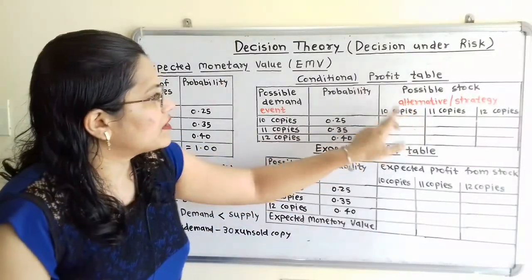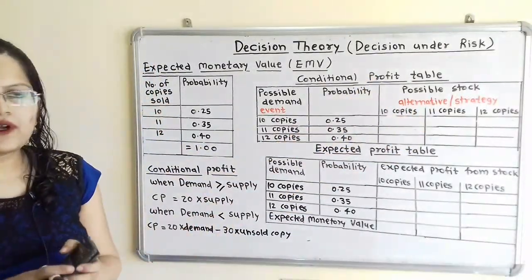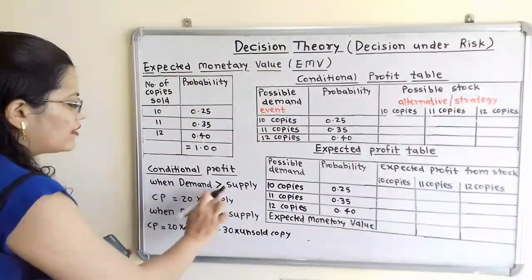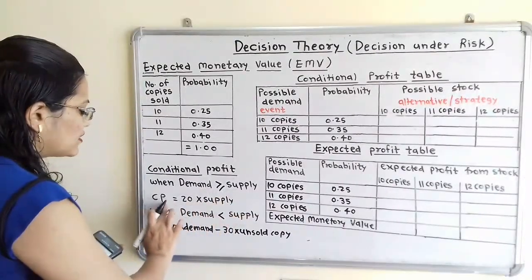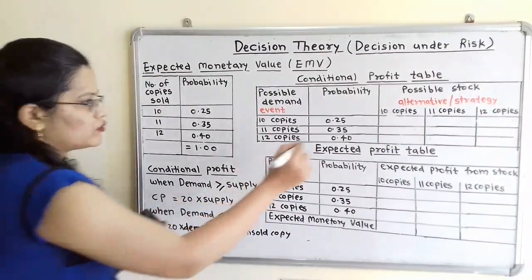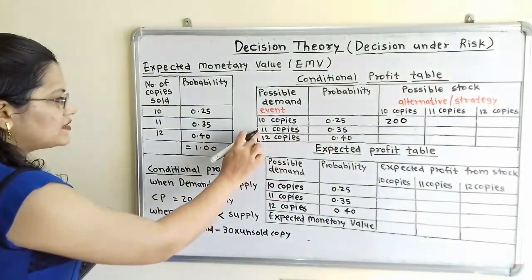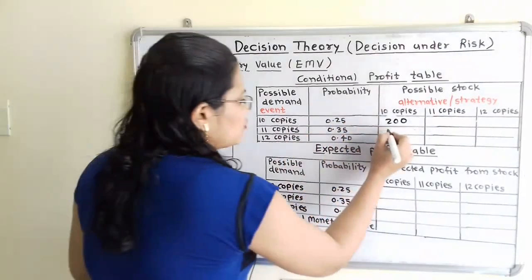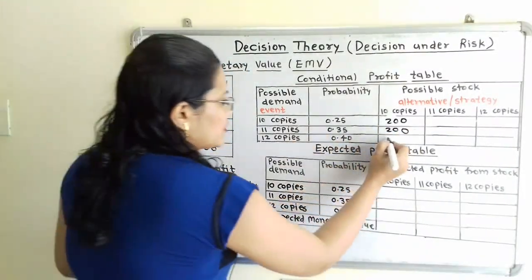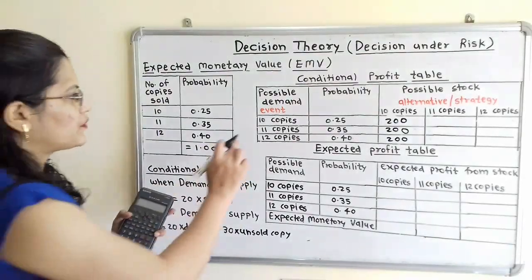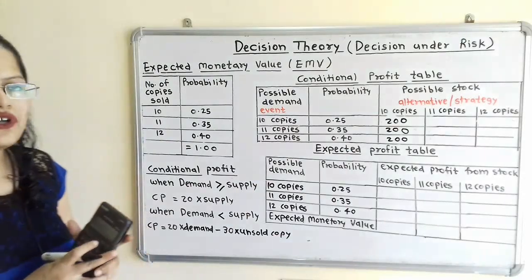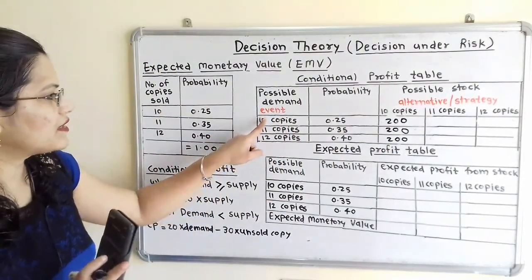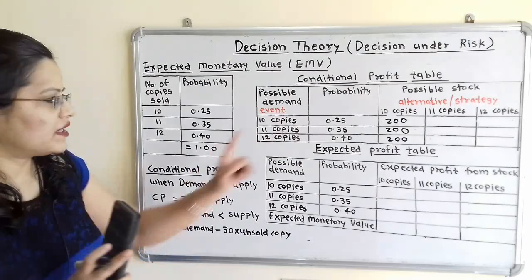Calculating conditional profit: when stock is 10 and demand is 10, demand equals supply, so profit = 20 × 10 = 200. When demand is 11 or 12 with stock 10, demand exceeds supply, so profit = 20 × 10 = 200. When stock is 11 and demand is 10, profit = 20 × 10 = 200 for sold copies, minus 30 for one unsold copy, giving 170. When stock is 11 and demand is 11, profit = 20 × 11 = 220.